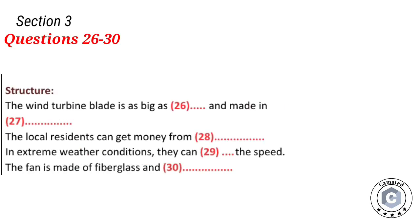Before you hear the rest of the talk, you have some time to look at questions 26 to 30. Now listen and answer questions 26 to 30. Offshore wind farms consist of a number of connected elements: turbines, foundations, array cables, offshore substation, export cable, and onshore substation and infrastructure. Just a single one of these giant wind turbine blades produced by manufacturer Siemens is almost as big as the Airbus A380 — the world's largest plane, made in Europe.